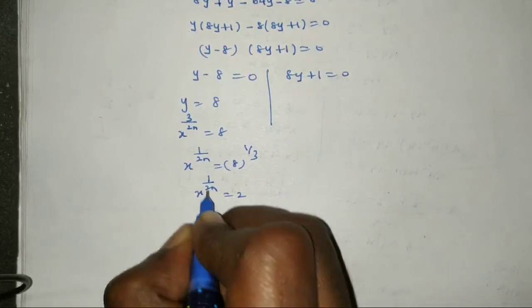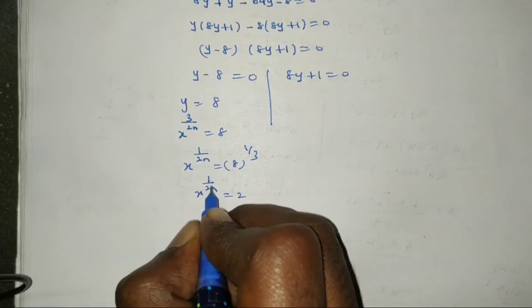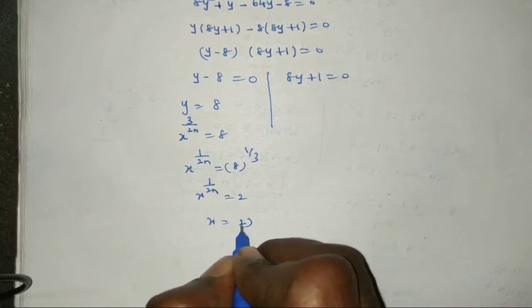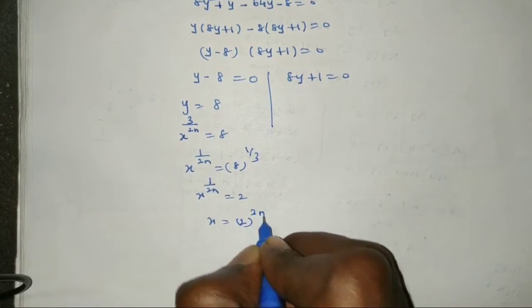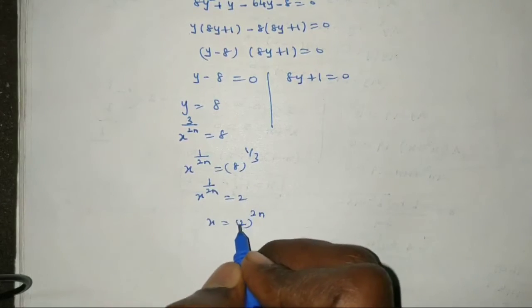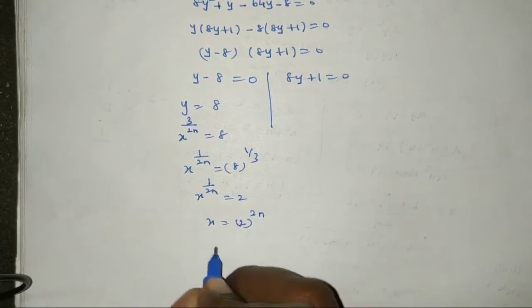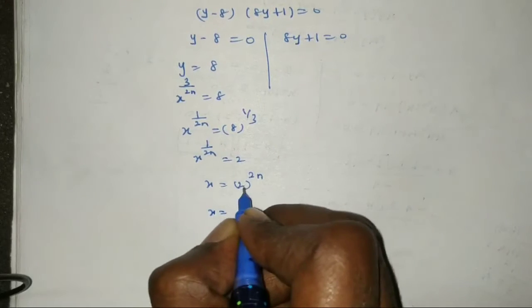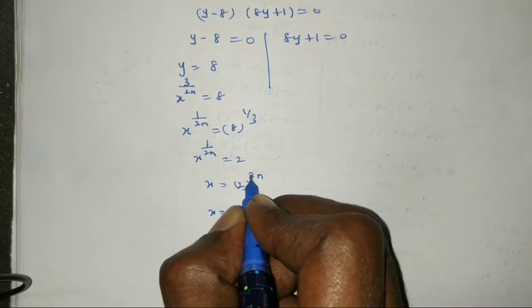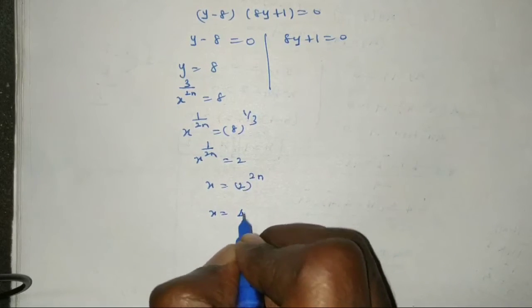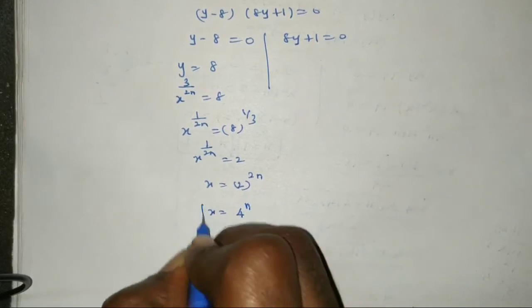So x^(1/2n) equal to 2. Raising both sides to the power 2n: x equal to 2^(2n), which equals 4^n. So x equal to 4^n is the first solution.